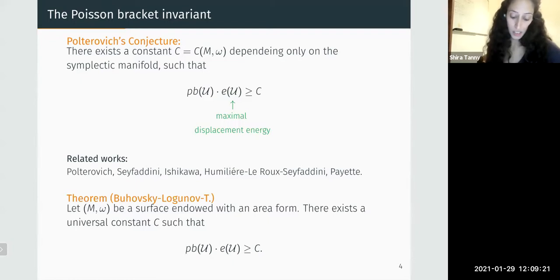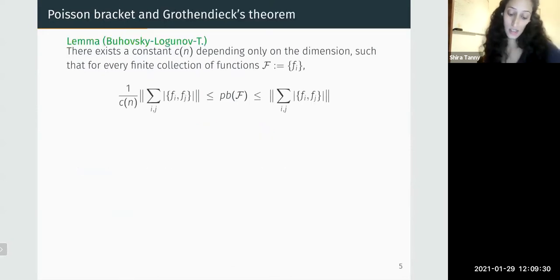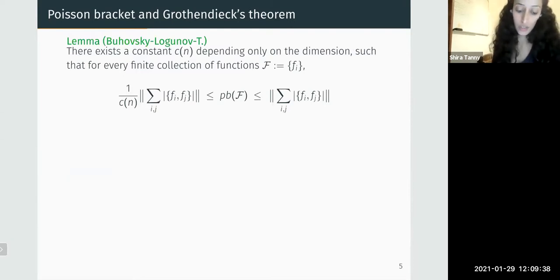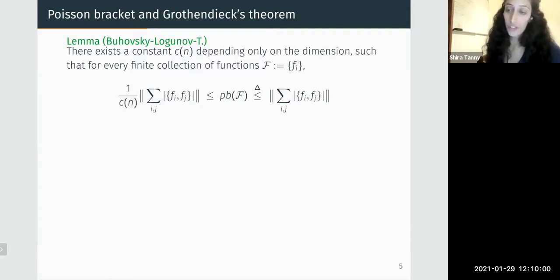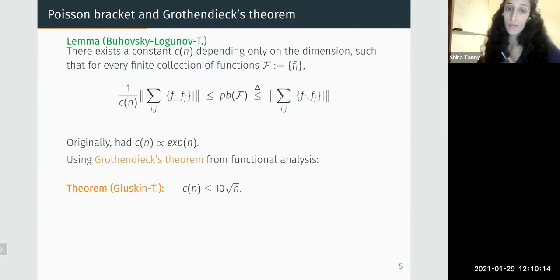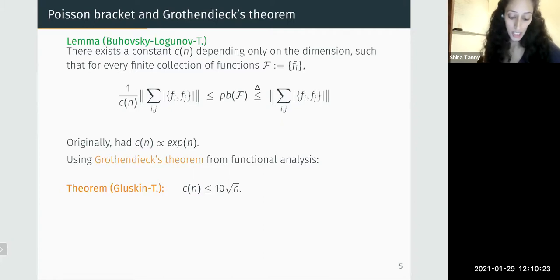Another piece of the proof is a lemma enabling us to replace the Poisson bracket invariant by a slightly simpler invariant, valid in general dimension. The claim is that there exists a constant C(n), depending only on the dimension, such that for every collection of functions, the Poisson bracket invariant as defined by Polterovich can be bounded by the sum of absolute values of Poisson brackets, up to this constant. Originally this constant grew exponentially in the dimension, but it turns out you can use Grothendieck's theorem to improve this to a sharp dependence of √n. Grothendieck's theorem is a fundamental result from functional analysis.